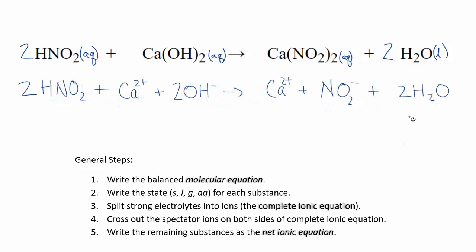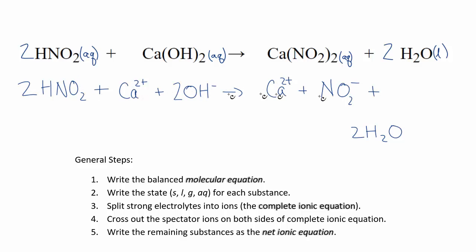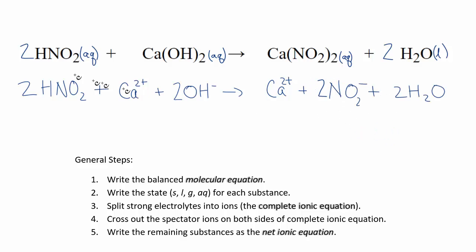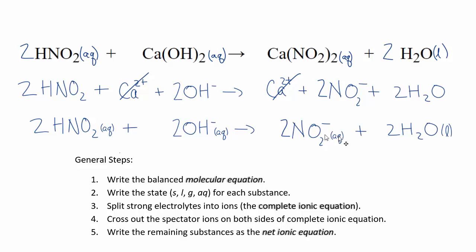The key here is we identified HNO₂ as a weak acid and did not break it into its ions. After writing the complete ionic equation, always check: I noticed I had 2 nitrite ions on the left but only 1 on the right — I'd forgotten to account for the coefficient of 2. Fixing that gives the correct complete ionic equation. Crossing out the Ca²⁺ on both sides, the net ionic equation simplifies. With 2s in front of everything, we can divide through for the simplest form.